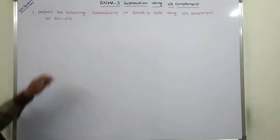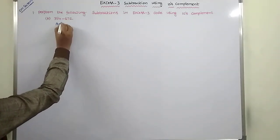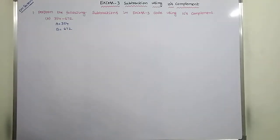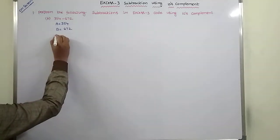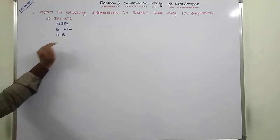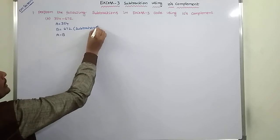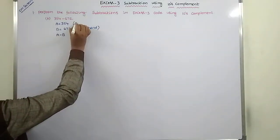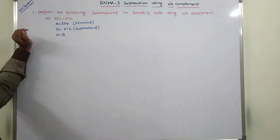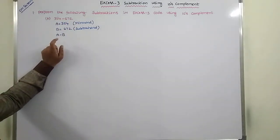Here A is equal to 354 and B is equal to 672. Which number is subtracted? That number is called the subtrahend. And from which number we subtract, that is called the minuend. So B is called the subtrahend and A is called the minuend. Now we have to perform A minus B.